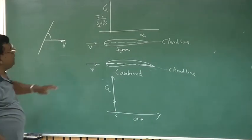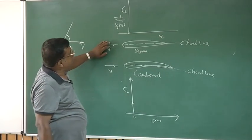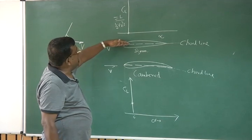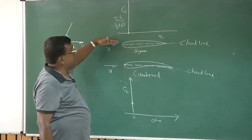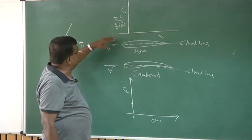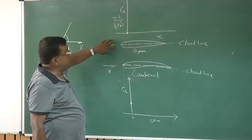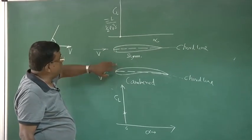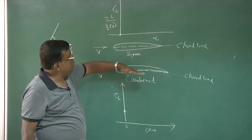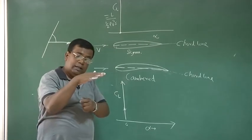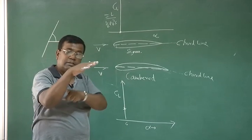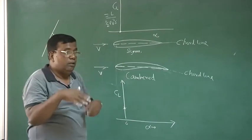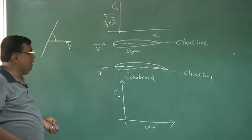To repeat: for the symmetric case, there is no angle between the chord line and the velocity vector, so at alpha equal to 0 it will produce zero lift. But for the cambered aerofoil, because of the camber, some surface is making an angle with the velocity vector, so even at alpha equal to 0 it will produce lift.